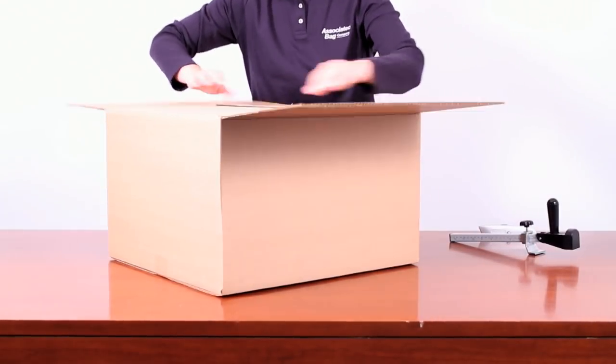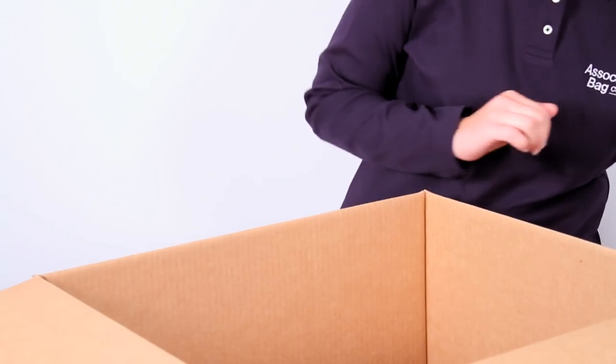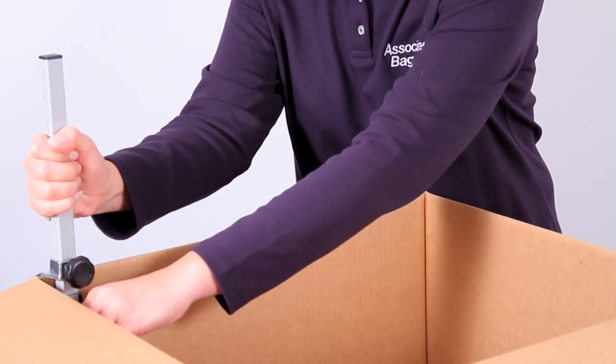Place the carton to be reduced on a firm surface with all flaps folded outward. Place the carton sizer tool on an open carton with the guide resting on the top edge of the carton and the blade facing the interior of the box.